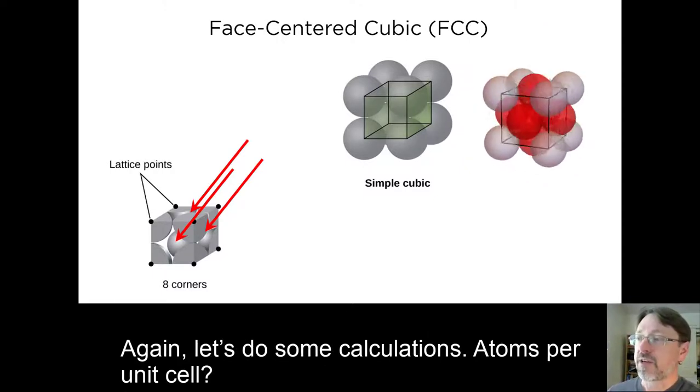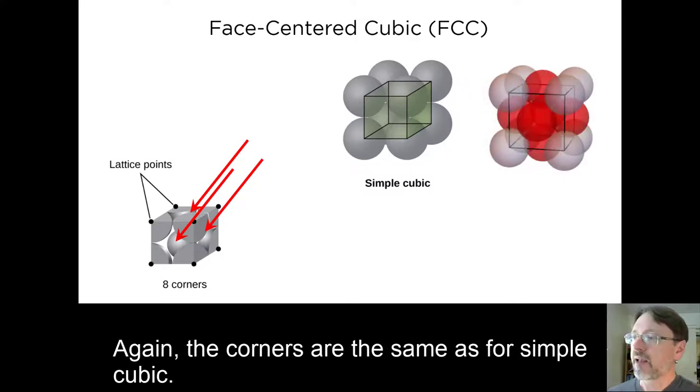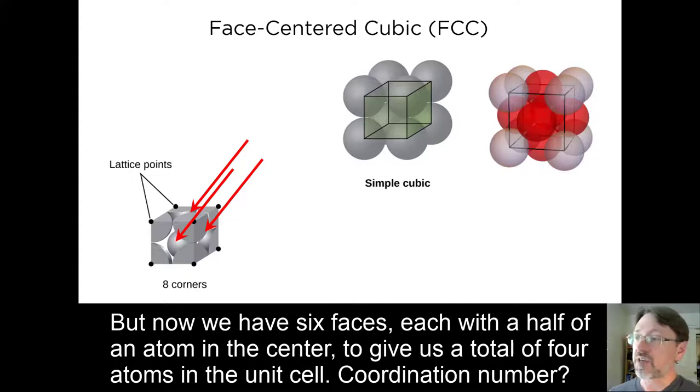Again, let's do the calculations. Atoms per unit cell. Again, the corners are the same as for simple cubic. But now we have six faces, each with half of an atom in the center, to give us a total of four.